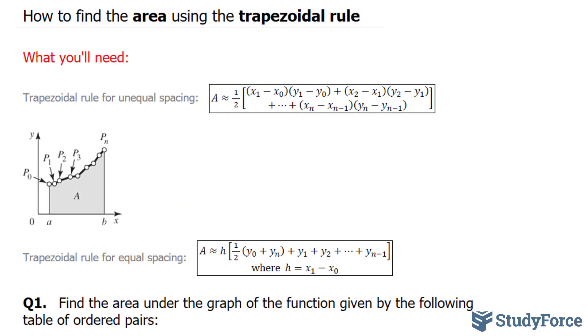In this lesson, I'll show you how to find the area using the trapezoidal rule. To find the area using the trapezoidal rule, you'll have to use one of these two formulas. Notice the difference. This is the rule for unequal spacing, and this is the rule for equal spacing.